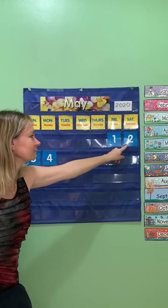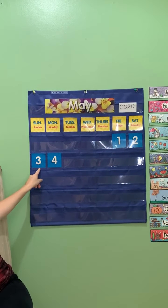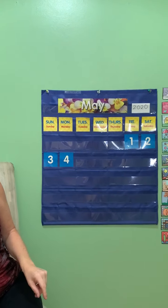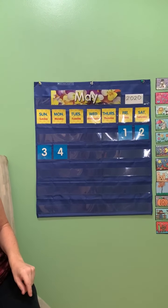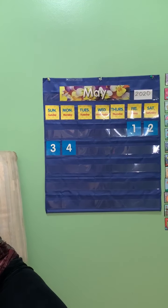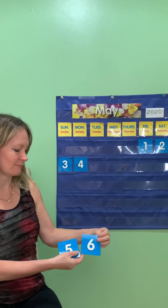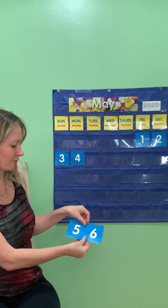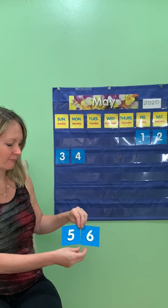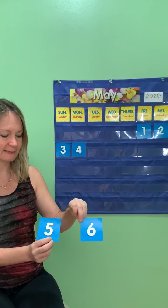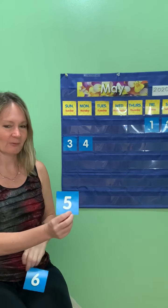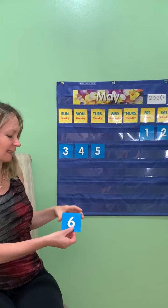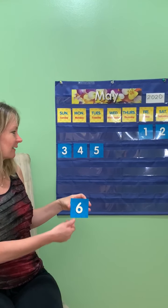Help me count. One, two, three, four. What comes after four? I have two numbers here and I would like for you to tell me which one comes next. After four is five. Is this the five or is this the five? I hope you guessed this one because this is number five. It comes after four, and six is going to be tomorrow's number.